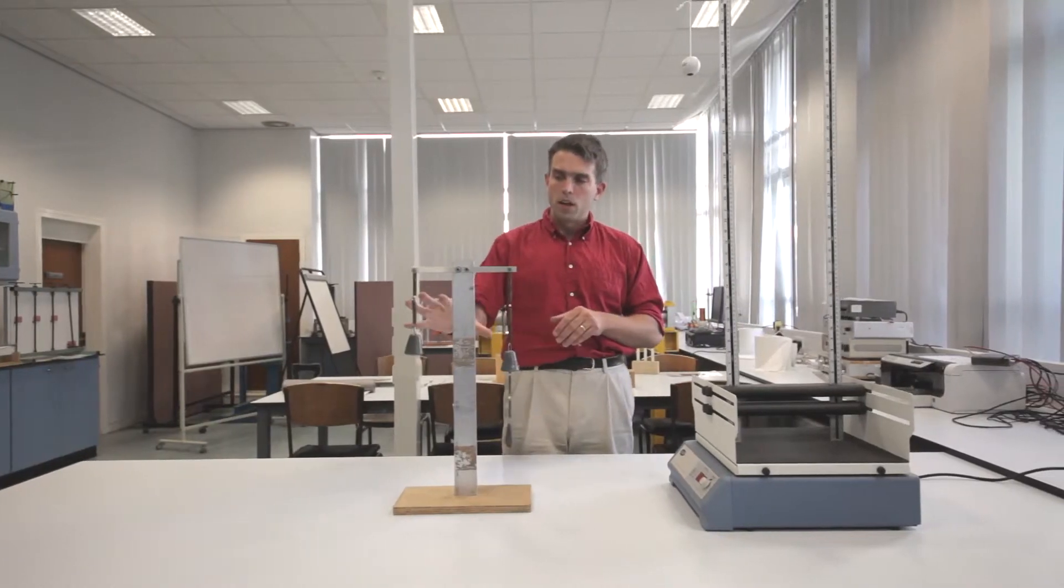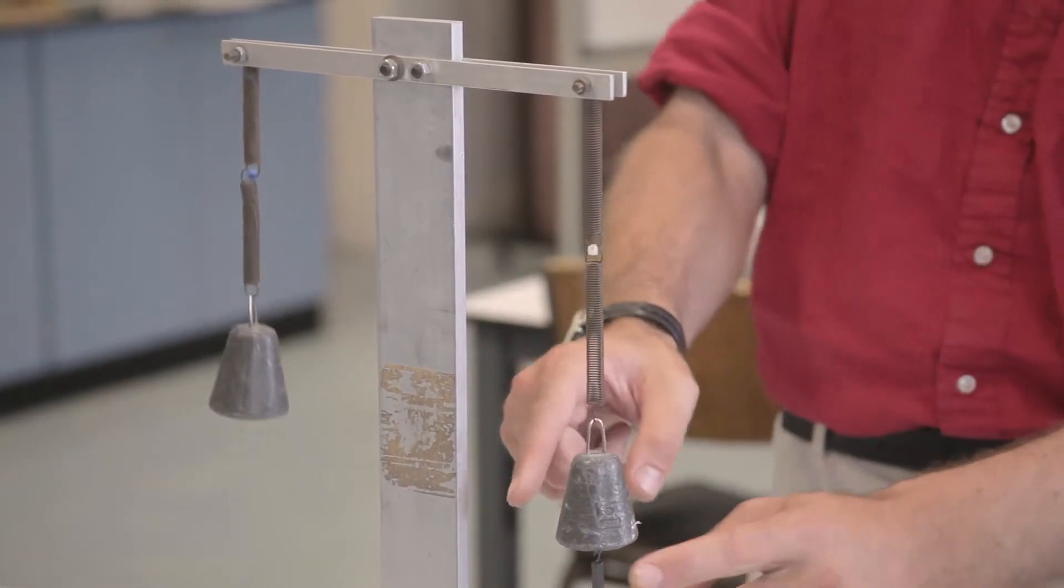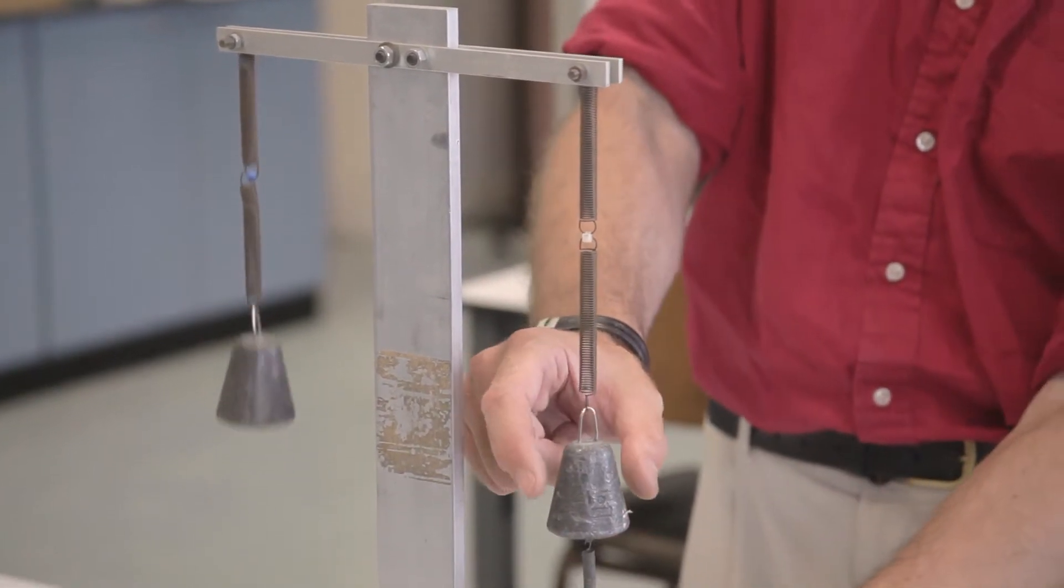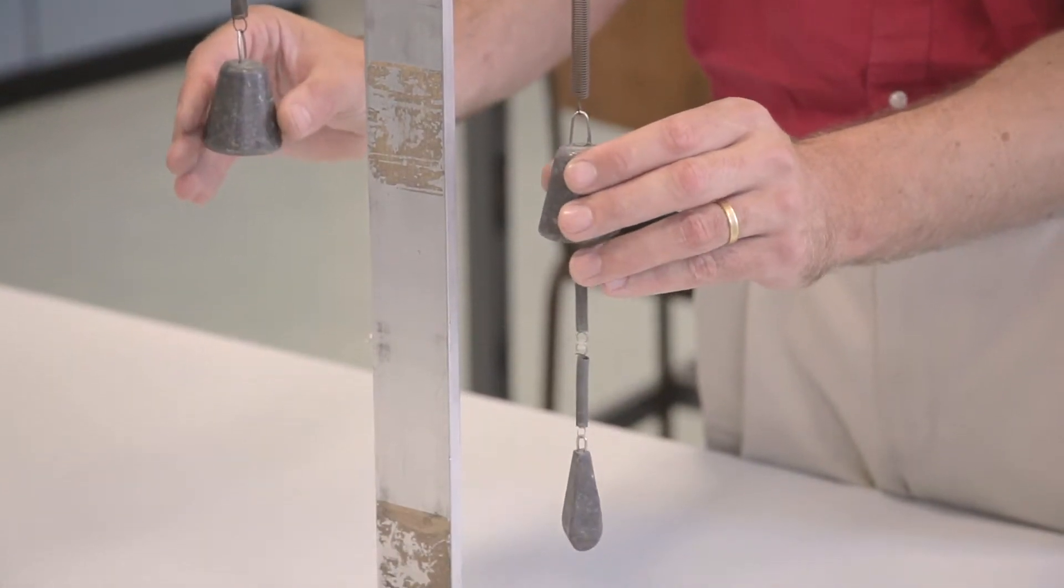So as engineers we have to try and stop that, and one approach for this is called a tuned mass damper. This is the arrangement we've got on the right here which is very similar, except on the bottom of the mass we've got a smaller mass on a different spring. And so I just stop that one and then run them both together.